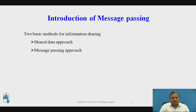Introduction of Message Passing: There are two basic methods for information sharing. One is the shared data approach and another one is the message passing approach. A process is a program in execution. When two computers are communicating with each other, we mean that two processes — one running on each computer — are in communication with each other, where processes are running on different machines.